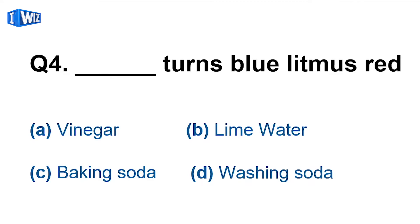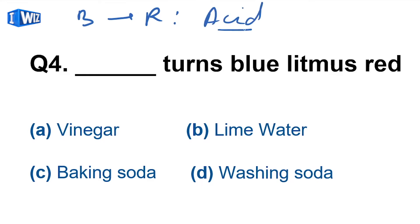Question number 4: which turns blue litmus red? Who changes blue litmus to red? It is acid. So this question is indirectly asking which of the following is an acid. Which one changes blue litmus to red? The answer is vinegar. Vinegar contains acid.